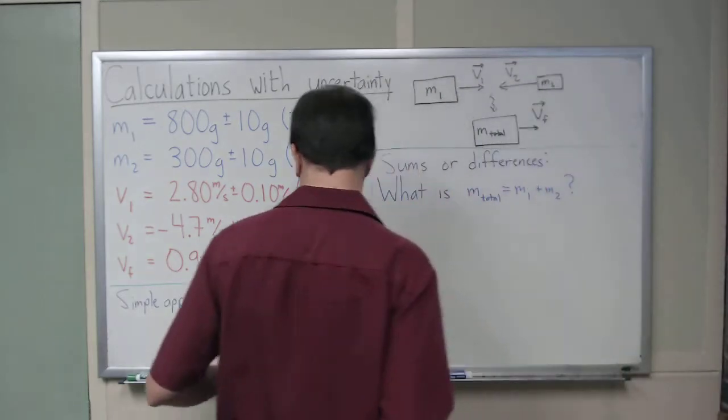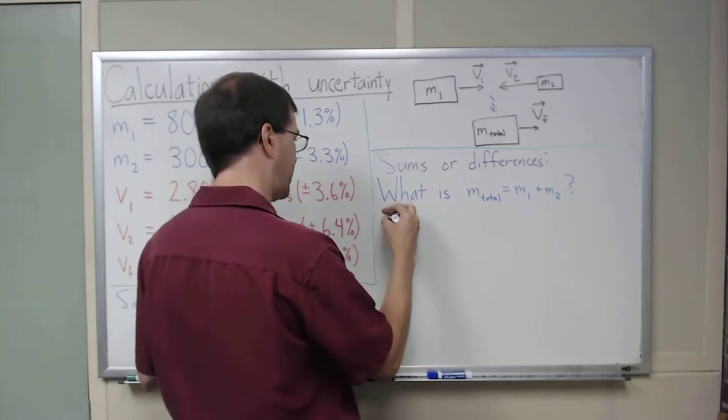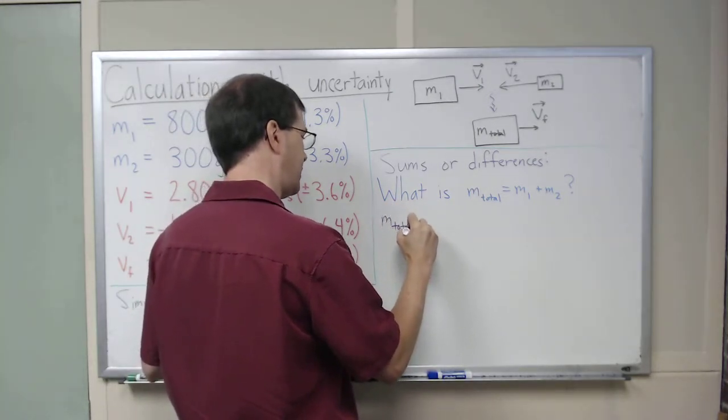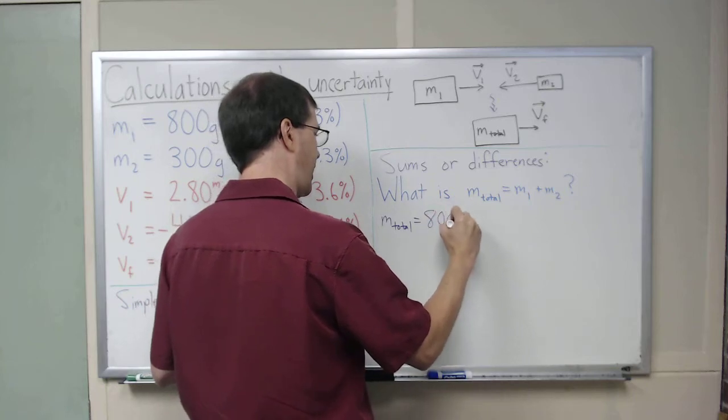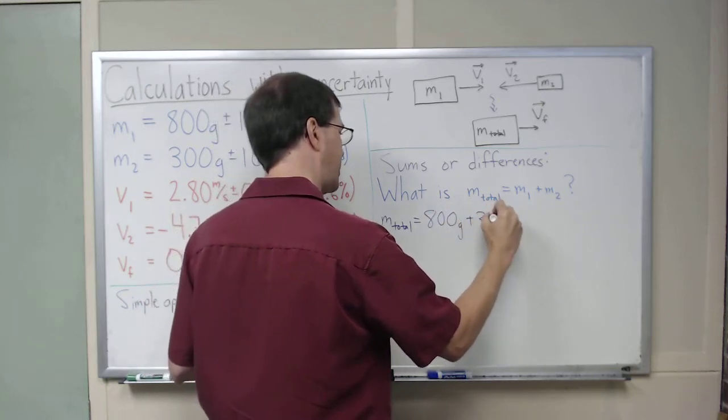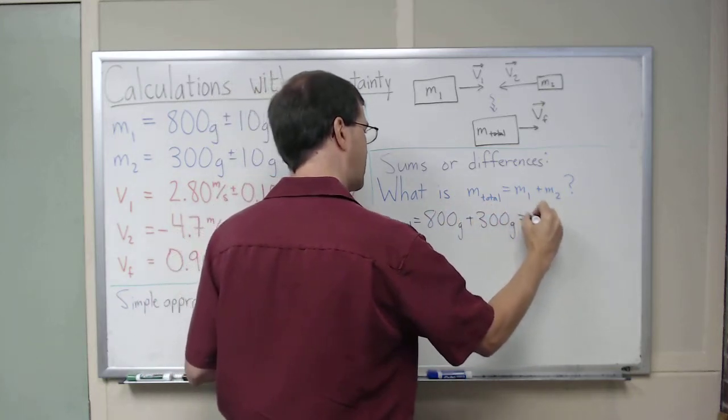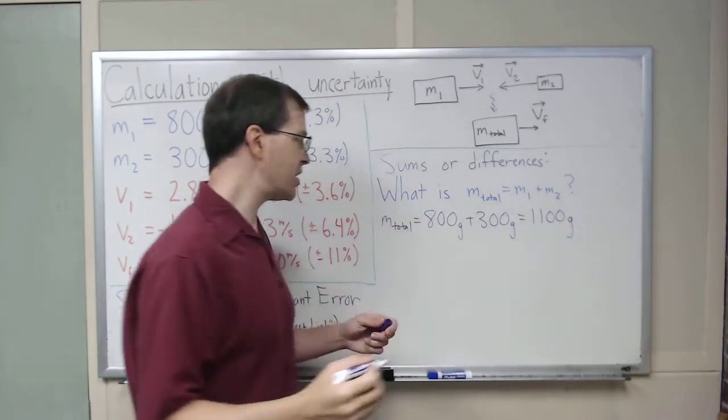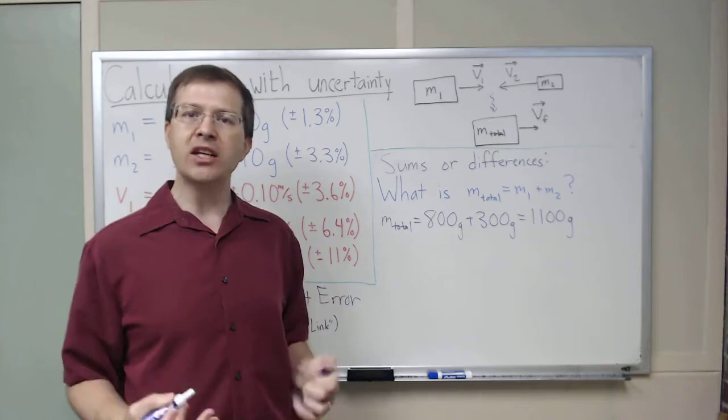We know how to do the calculation in general. We know that m total equals 800 grams plus 300 grams, which is equal to 1100 grams. So that's how we do it. How do I deal with the uncertainty here?